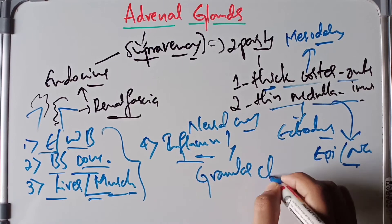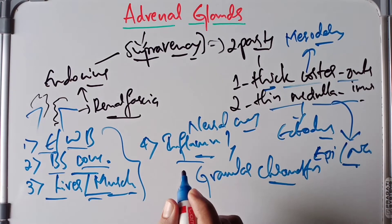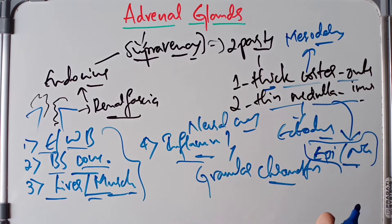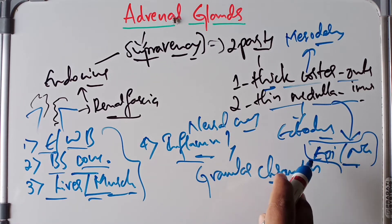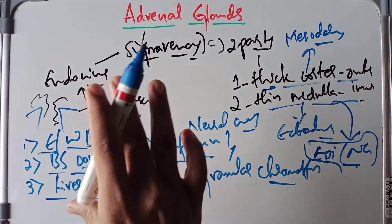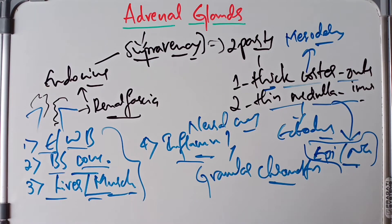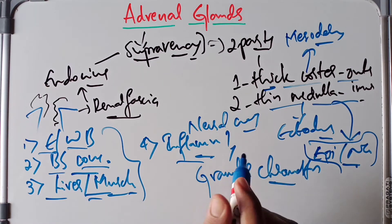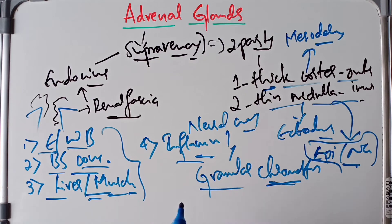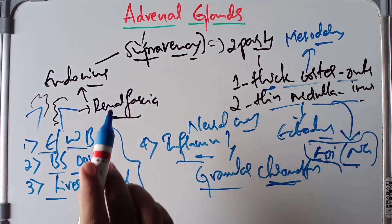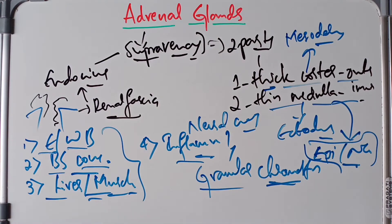The medulla is composed of large granular chromaffin cells which secrete catecholamines — epinephrine and norepinephrine — released by post-ganglionic sympathetic fibers. These are stored in good quantity in the medulla and are readily oxidized to a dark brown color by certain salts such as potassium dichromate, making the adrenal medulla part of the chromaffin system of the body.